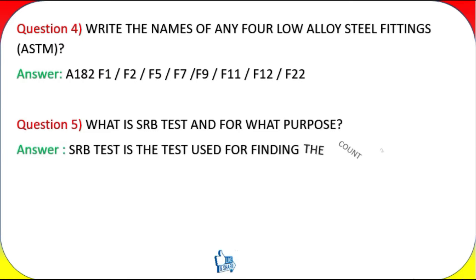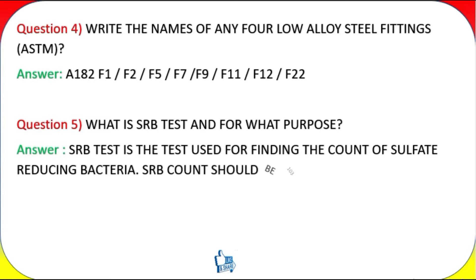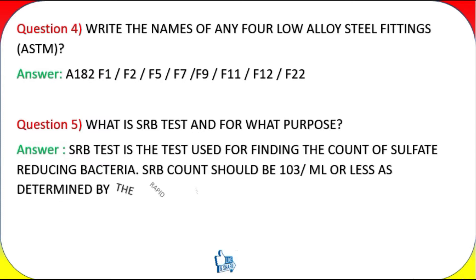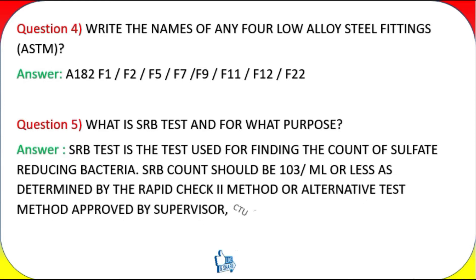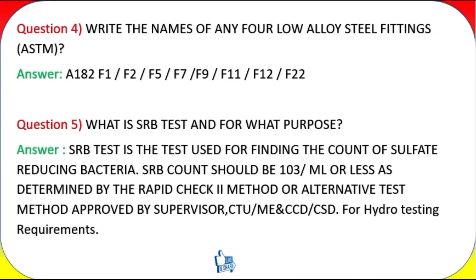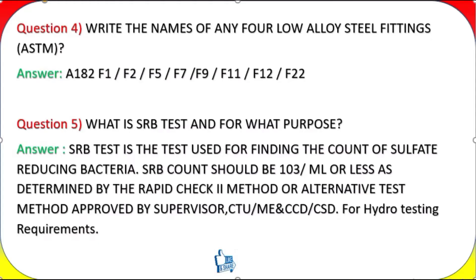Question 5: What is an SRB test and for what purpose? Answer: SRB test is used for finding the count of sulfate-reducing bacteria. SRB count should be 10³/ml or less, as determined by the Rapid Check 2 method or an alternative test method approved by the supervisor CTU/ME and CCD/CSD, for hydro testing requirements.